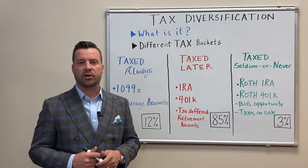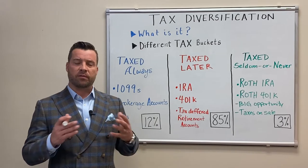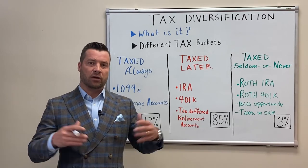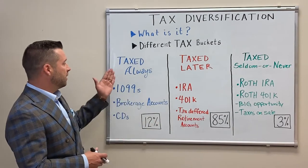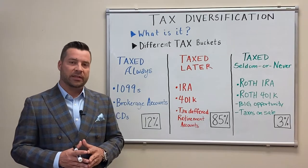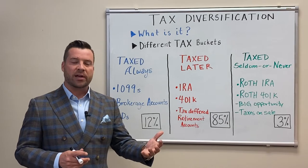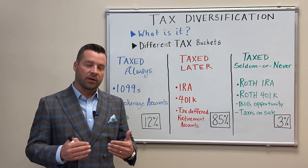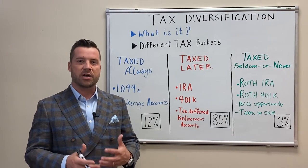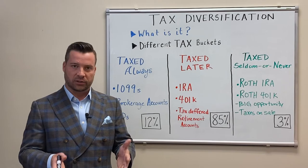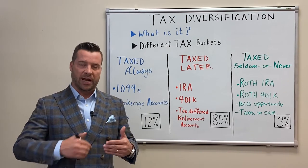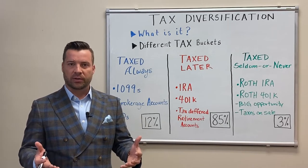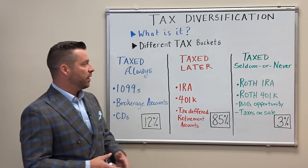What is tax diversification and what does it mean to you and your family, and why is it important? Starting with a brief overview: there are three different buckets when it comes to tax diversification. The first bucket is what we call 'taxed always' — investments that provide regular 1099s, CDs, dividends, essentially brokerage accounts or non-retirement accounts. Not IRAs, not Roth accounts, not 401ks — just regular money. These are going to be taxed every year as dividends and capital gains are paid.